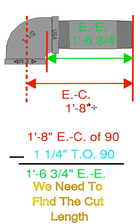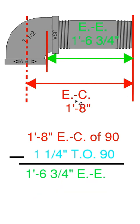If we need a piece one foot eight from the center of that 90 to the end of that pipe, then we could write down one foot eight. We know we have to take off one 90 at an inch and a quarter.